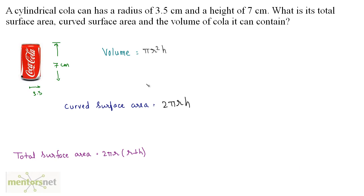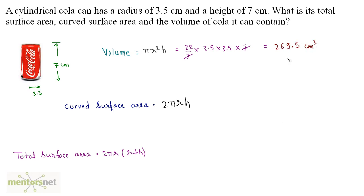Let's first calculate the volume. That's πr²h, which is 22/7 × 3.5 × 3.5 × 7. The 7 in the denominator and the h = 7 cancel out, leaving 22 × 3.5 × 3.5. That gives 269.5 cubic centimeters. So this is how much cola the tin can can contain.